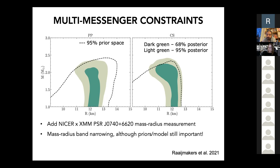Another question: if I understand correctly, you said the hotspot in these objects is quite stable, but is that also the case for other sources or at different times during flares? For these rotation-powered pulsars, the hotspots are coming from the field and the field doesn't change that fast. One thing we did was divide our J0030 data set into two — taking the first half versus the second half of the observation.